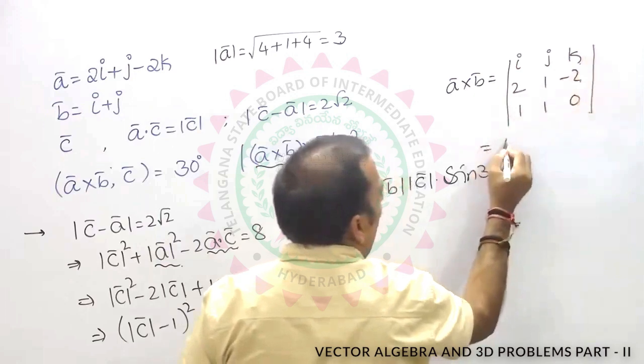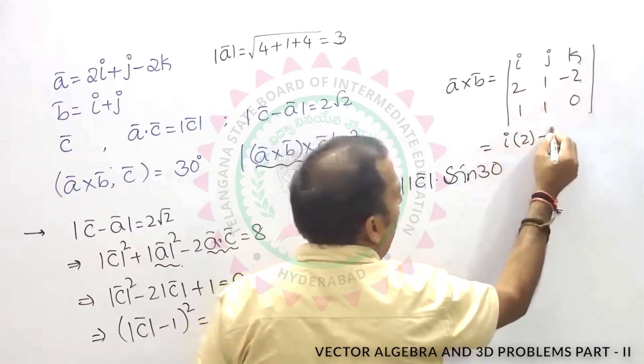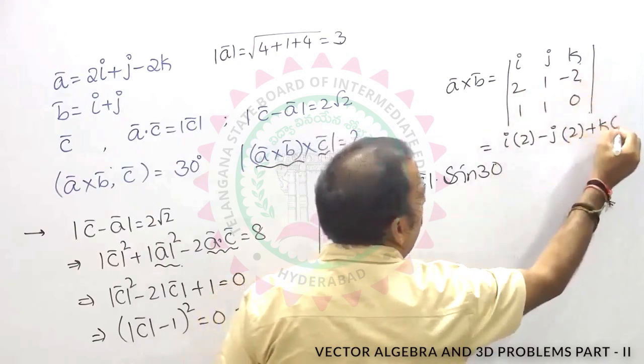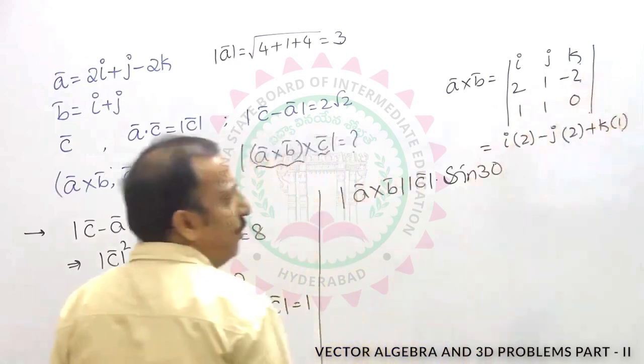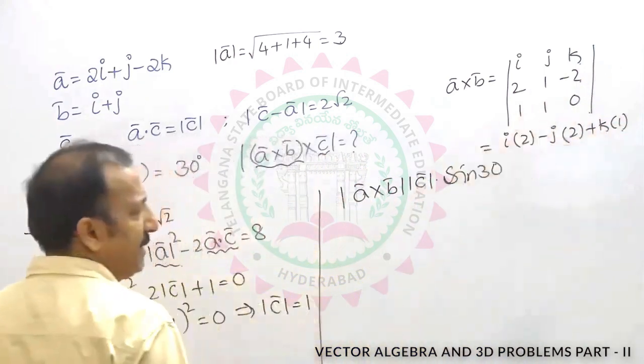So that is i into 0, that becomes 2, minus j into 0, plus 2, plus k into 1. So a cross b is 2i minus 2j plus k.